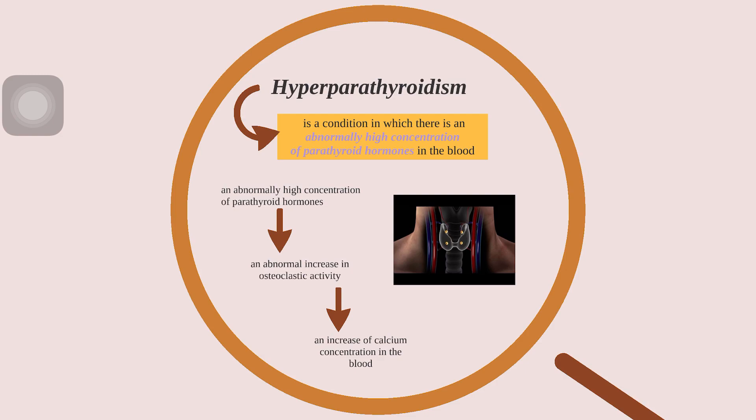Hyperparathyroidism is a condition in which there is an abnormally high concentration of parathyroid hormones in the blood. The process involves: first, an abnormally high concentration of parathyroid hormones; second, an abnormal increase in osteoclastic activity; and third, an increase of calcium concentration in the blood.